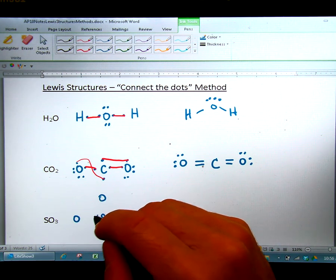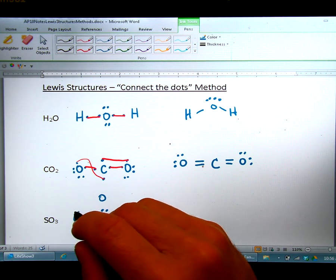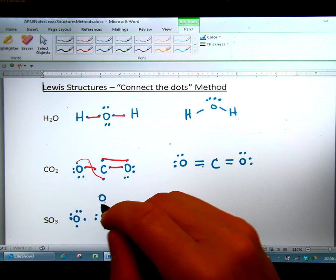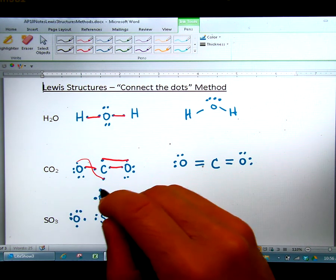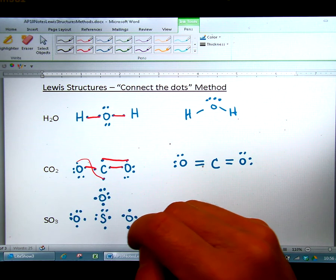So we're going to place one, two, three, four, five, six valence electrons around each of the four atoms: sulfur and three oxygens.